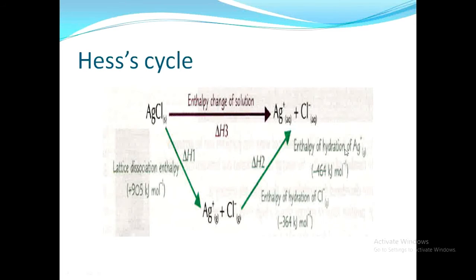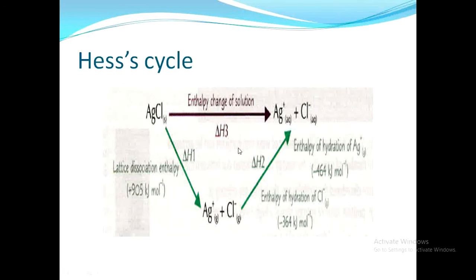In the second process, ΔH2, we are hydrating the silver positive ions and chloride negative ions in water. So ΔH2 represents two enthalpies: the enthalpy of hydration of silver positive ion, which is −464 kJ/mol, and the enthalpy of hydration of chloride ion, which is −364 kJ/mol. This is how you draw the Hess's cycle for the enthalpy of solution calculation.